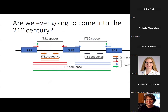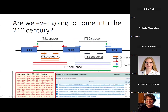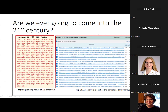The other approach is sequencing the internal transcribed spacer regions of the ribosomal RNA gene — the ITS1 and ITS2 regions are the best genetic targets for mold identification. You amplify those sections, sequence them, and search large databases for identification. Sequencing is available when needed for difficult cases.